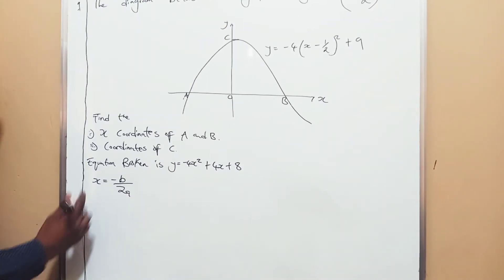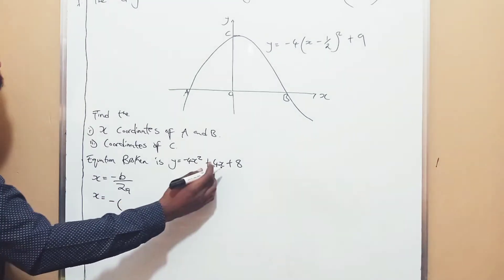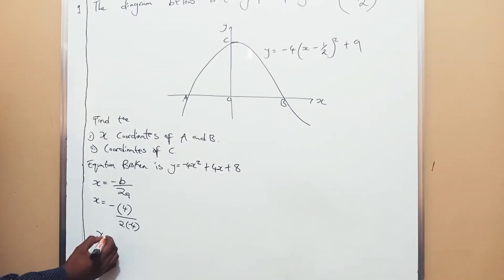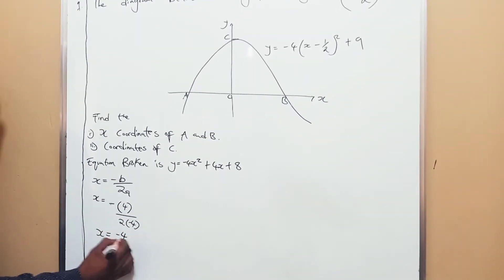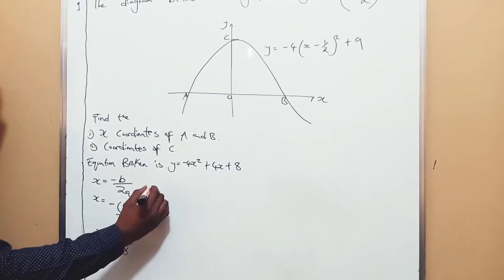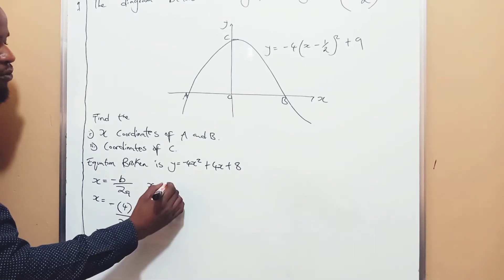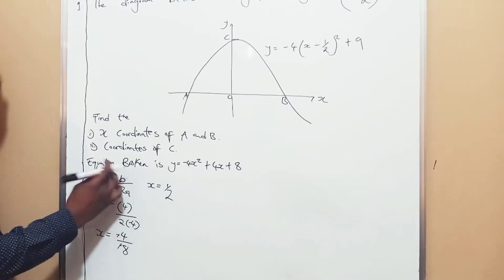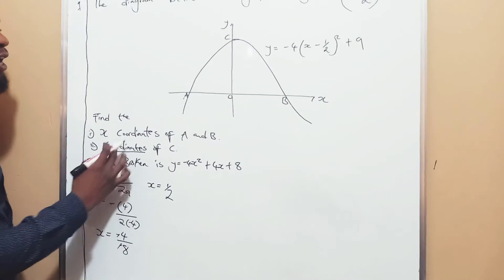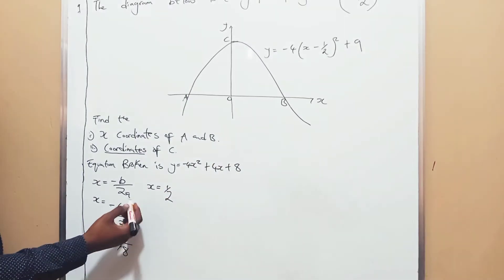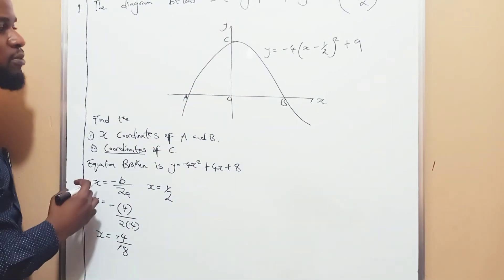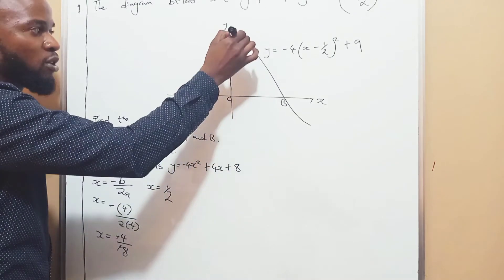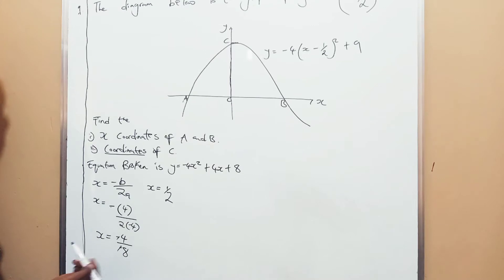So we have x equals negative b over 2a. What is our b? It's 4. What is our a? Negative 4. So negative times 4 is negative 4; 2 times negative 4 is negative 8. So x equals negative 4 over negative 8, which is 1 over 2. So we have found our x. Now the axis of symmetry was at 0, and c was pointing there. We found the axis of symmetry is at x equals one half.